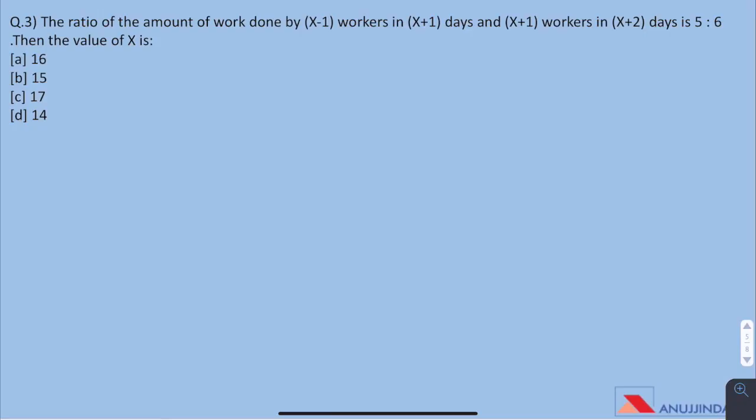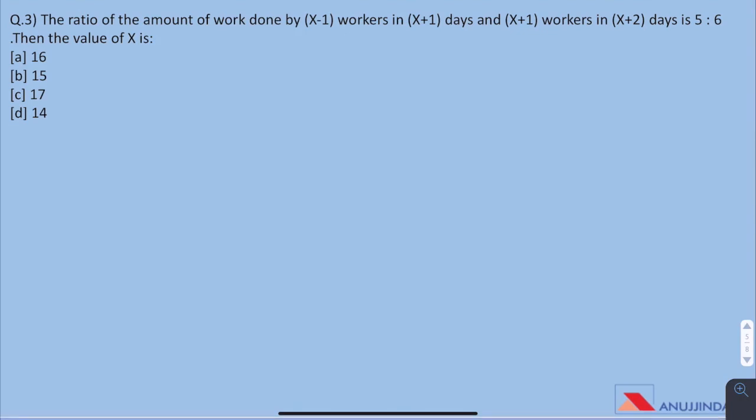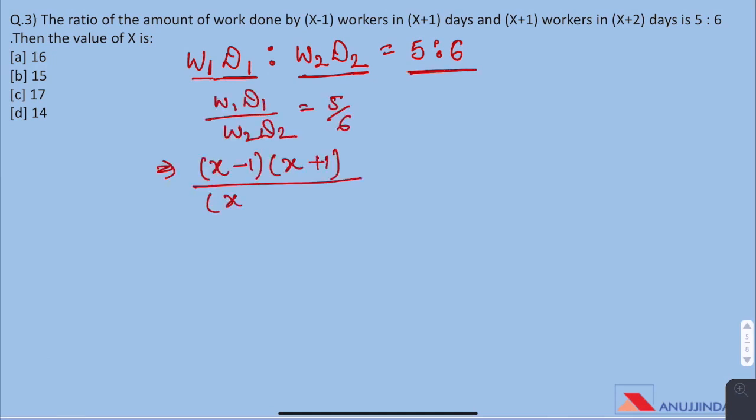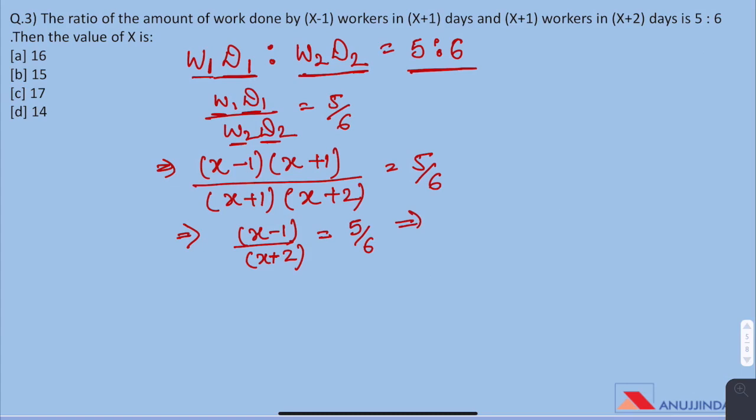Question 3. The ratio of amount of work done by x-1 workers in x plus 1 days and x plus 1 workers in x plus 2 days is 5 by 6. Then the value of x is. Don't panic when you see these variables. Keep you calm and proceed further with the given information and use the suitable formula. Here we have work done by x minus 1 workers in x plus 1 days is to x plus 1 workers in x plus 2 days 5 is to 6. We can write it as (x minus 1)(x plus 1) over (x plus 1)(x plus 2) equals to 5 by 6. Here we have done nothing but put the values of number of workers in first scenario and days, number of days and then number of workers in second scenario and number of days taken. On further solving, we get the value of x which comes out to be 16.